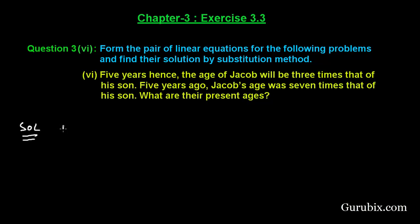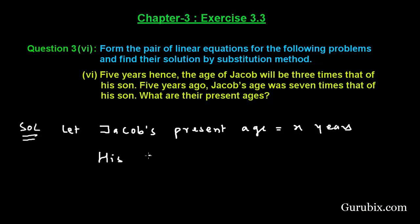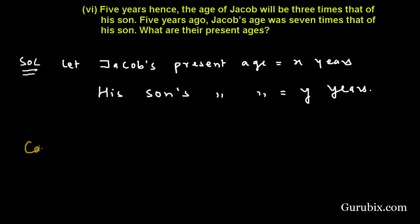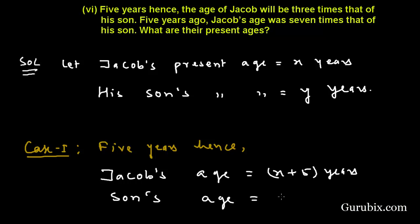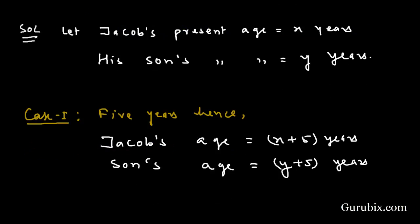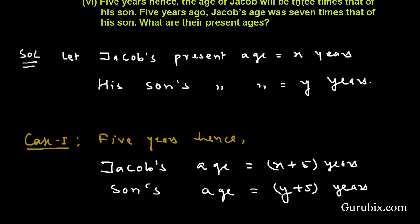Let Jacob's present age be X years and his son's present age be Y years. In Case 1, five years hence, Jacob's age will be X plus five years and the son's age will be Y plus five years. The condition is that Jacob's age will be three times that of his son.